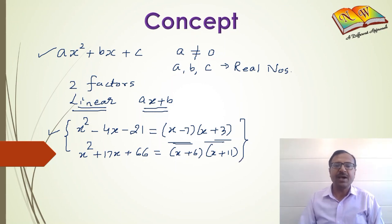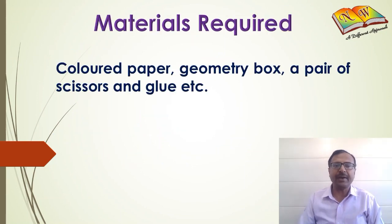Let us now see how we can derive these factors experimentally using the activity for which the material required is: we need some colored paper sheets, geometry box obviously for measurements, pair of scissors for cutting work and glue for pasting. So, let us now perform this activity.